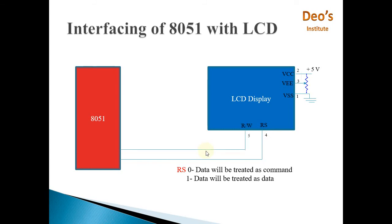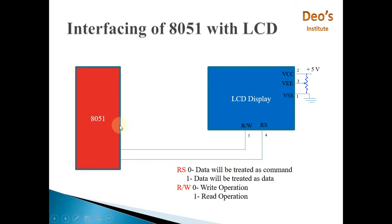Pin number 5 is the read/write pin. When it is 0, a write operation is performed — meaning data from the 8051 is written to the LCD display. When it is 1, the 8051 reads from the LCD display. Reading operation is not very common; generally only writing is performed. So if you are sure you are only going to write to the LCD and not use read operation, pin number 5 can simply be connected to ground.